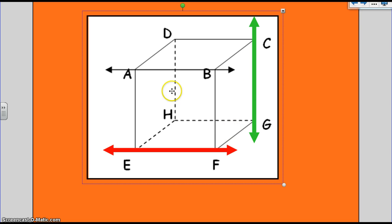These are skew lines. Line AB is skew with CG. Line EF is skew with CG.